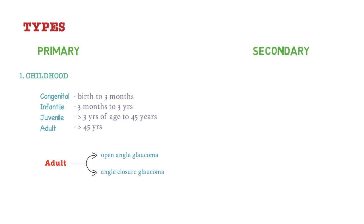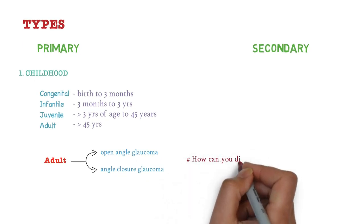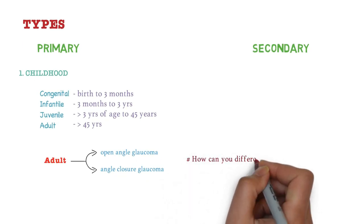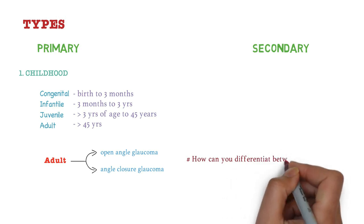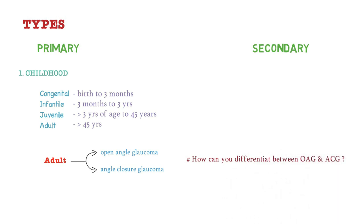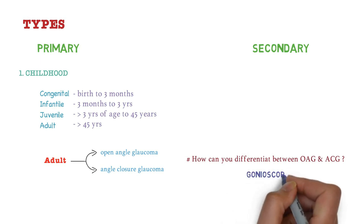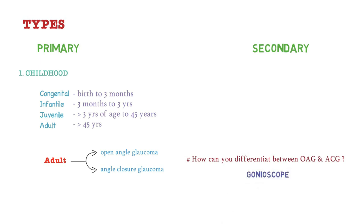How can you differentiate between open angle glaucoma and angle closure glaucoma? You can differentiate them using a gonioscope. Using a gonioscope you can measure the angles and differentiate open angle glaucoma from angle closure glaucoma.